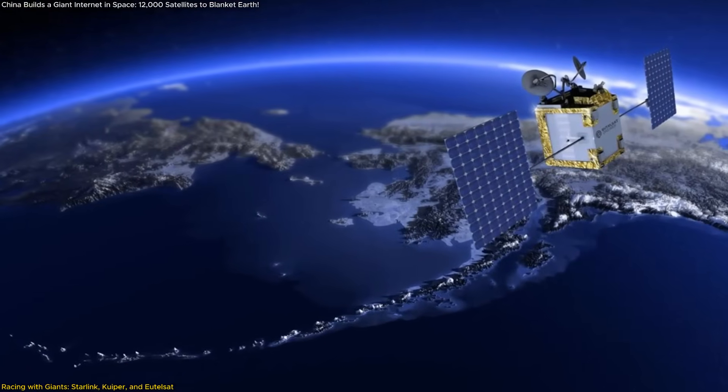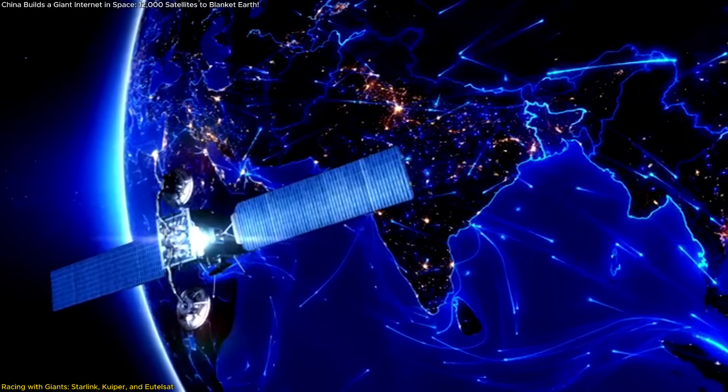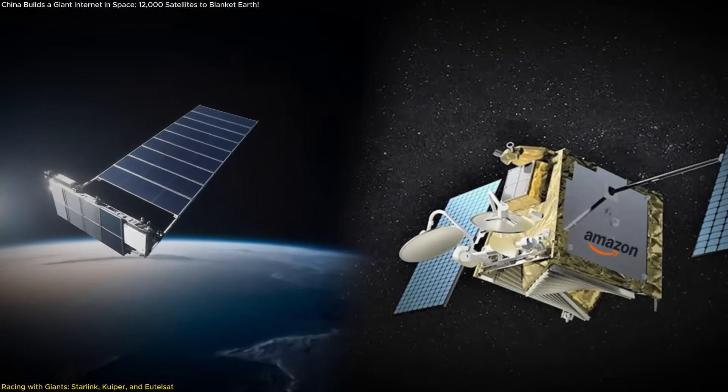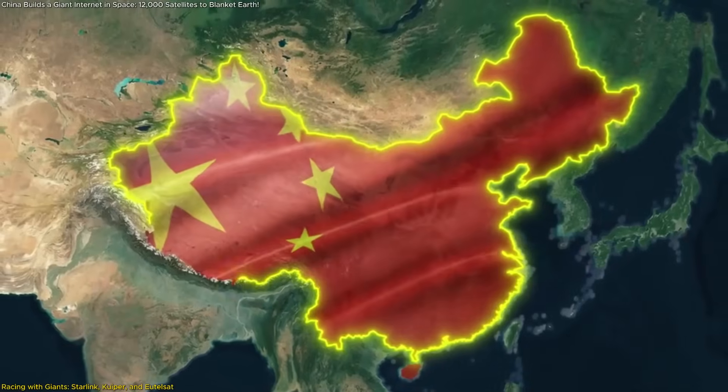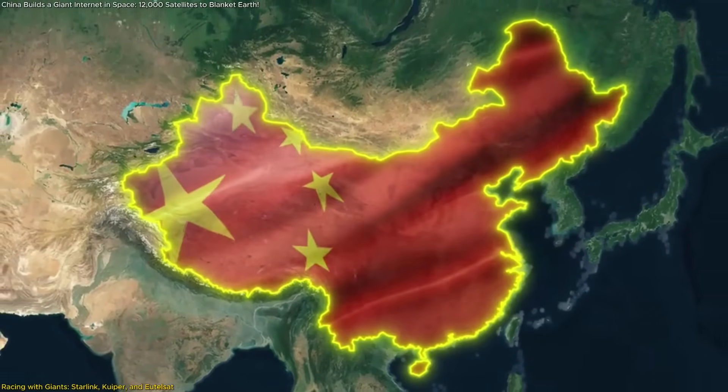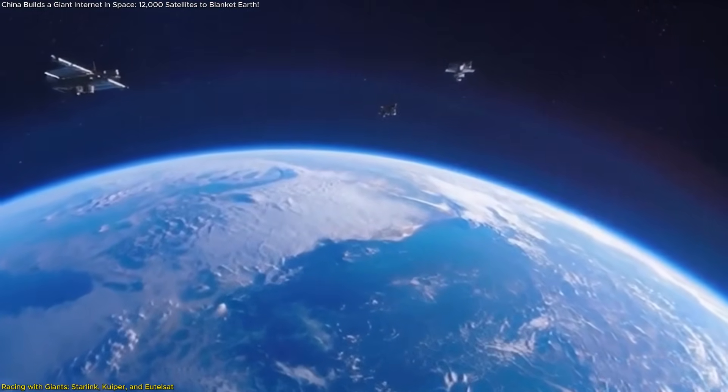Unlike its competitors, Guang may prioritize coverage in Africa, Asia, and South America, regions underserved by Starlink and Kuiper due to cost or regulatory hurdles. If China can offer low-cost or subsidized terminals and data plans, it could find itself leapfrogging the competition in emerging markets.